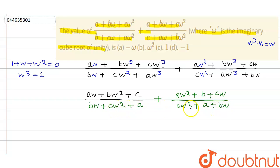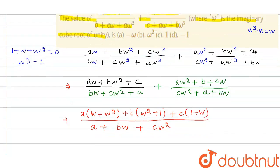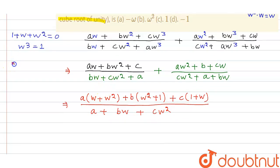Taking the LCM, we get a(ω + ω²) + b(ω² + 1) + c(1 + ω) in the numerator. Using the identities: ω + ω² = -1, ω² + 1 = -ω, and 1 + ω = -ω², we substitute these values.